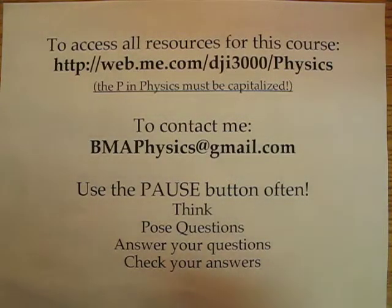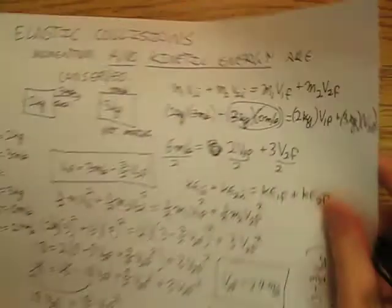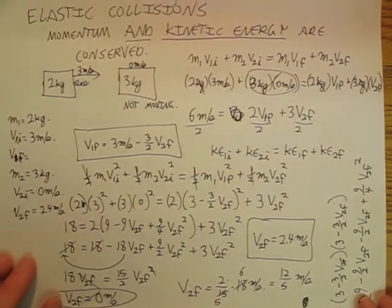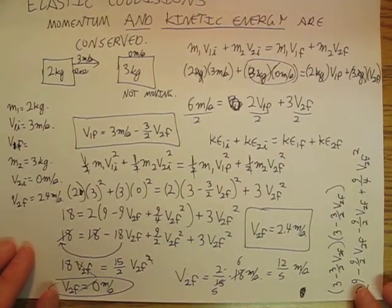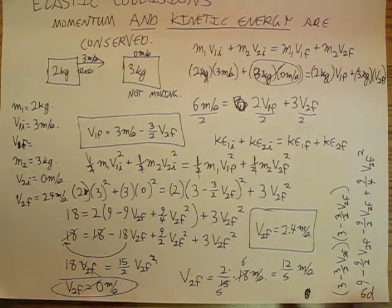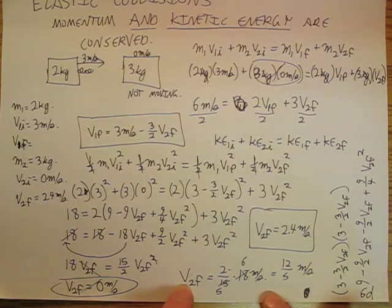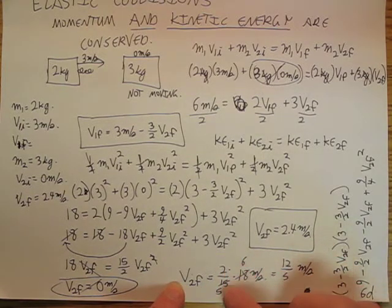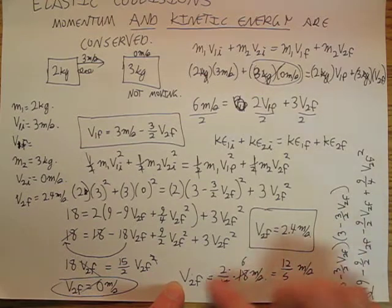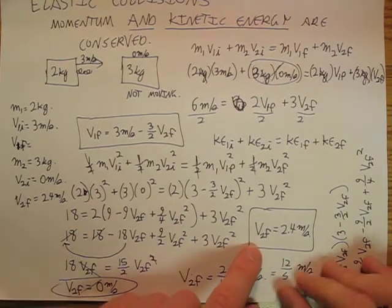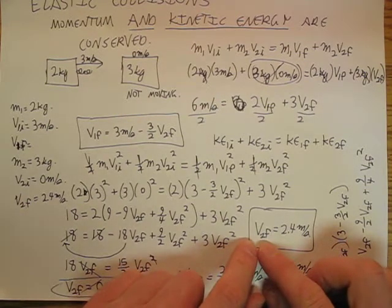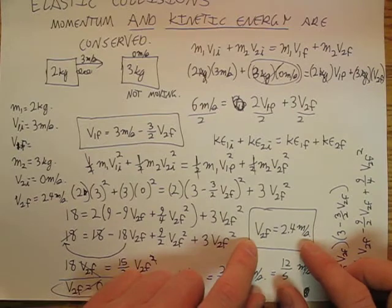Okay, so we just need to finish up a few thoughts that we had from lecture 6D last time. We filled up a page and ran out of time. So we're back at it. Way back down on this extremely busy page, we ended up with v_2f equals two-fifteenths of eighteen, so we eventually ended up with v_2f is equal to 2.4 meters per second.